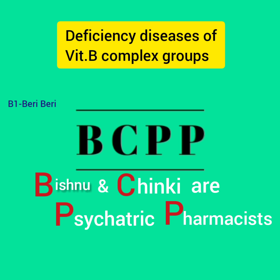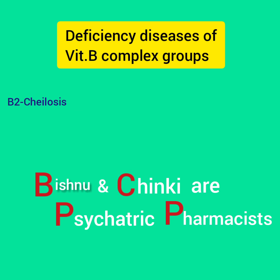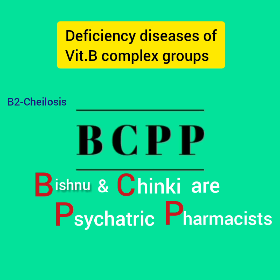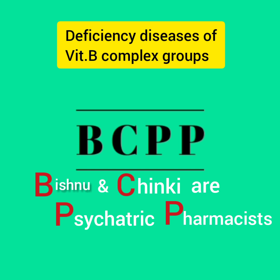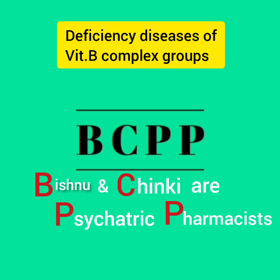The highlighted C refers to cheilosis — that means cracks in the lips — which is the deficiency disease of vitamin B2 (riboflavin). The highlighted P from 'psychiatric' stands for pellagra, and the highlighted P from 'pharmacist' stands for paresthesia. So these four letters give you the deficiency diseases of vitamin B1, B2, B3, and B5.